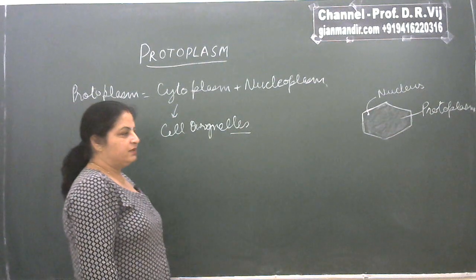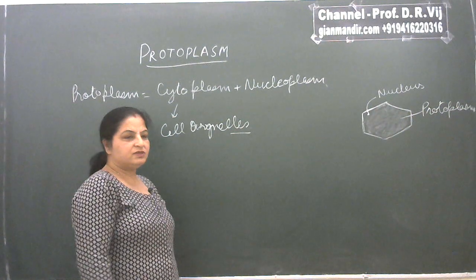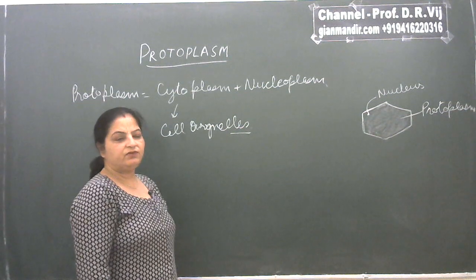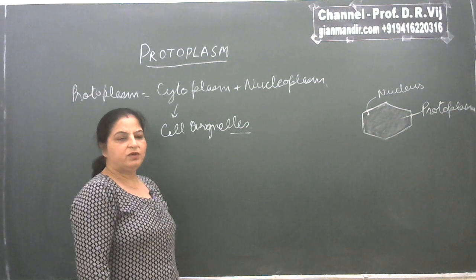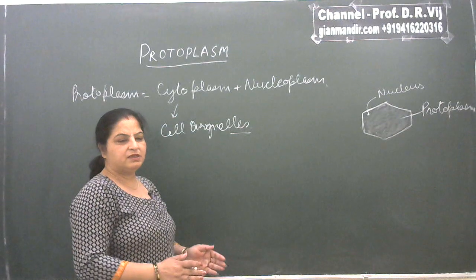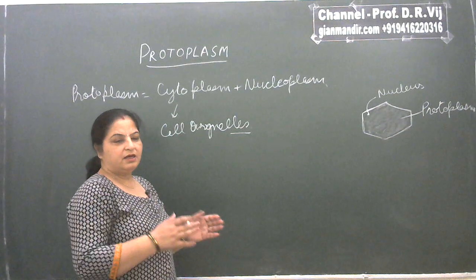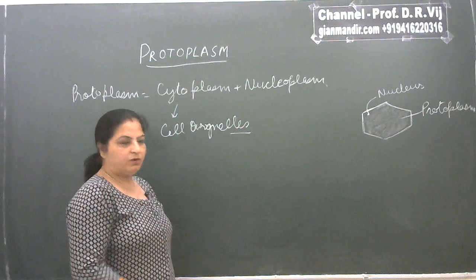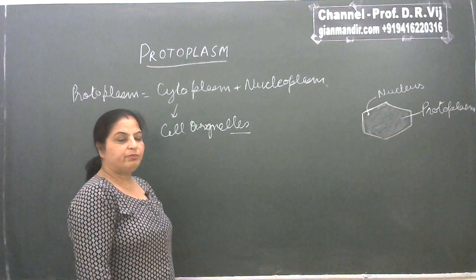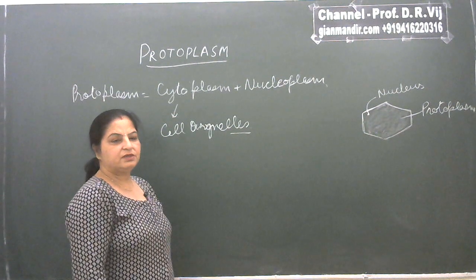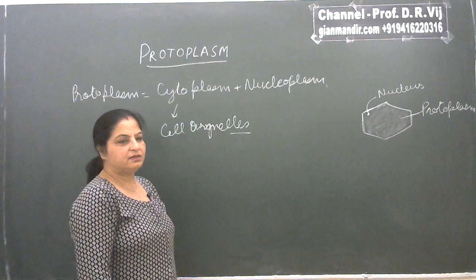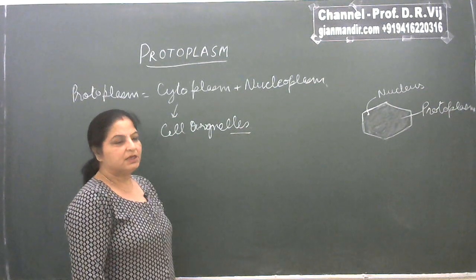In eukaryotic cells, these cell organelles are membrane-bound. The basic difference between eukaryotic and prokaryotic cells is that eukaryotic cells have a membrane-bound nucleus as well as membrane-bound cell organelles, whereas in prokaryotic cells, membrane-bound nucleus or membrane-bound cell organelles are not present.